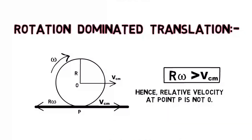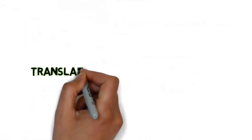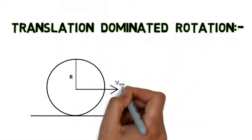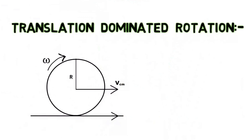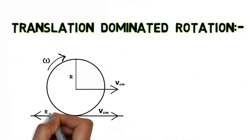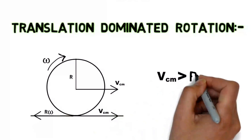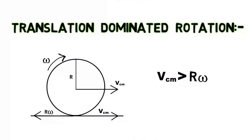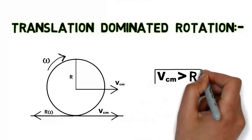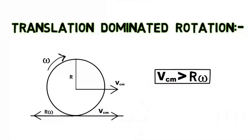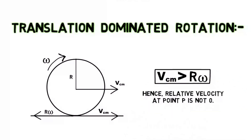That the bottom most point is not at rest is a defining feature of impure rolling. In translation dominated rotation, similarly we have VCM in the forward direction, R omega in the backward direction, and as VCM is greater than R omega, the bottom most point tends to move forward.